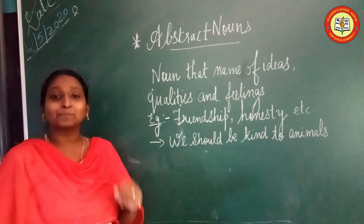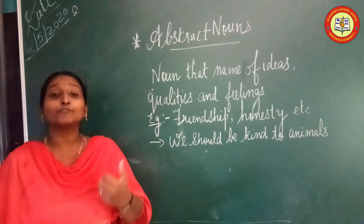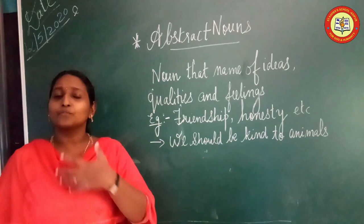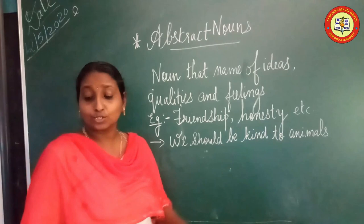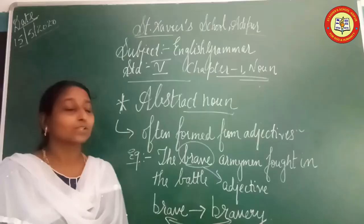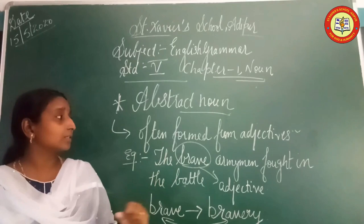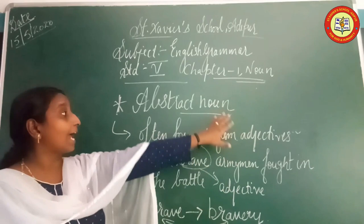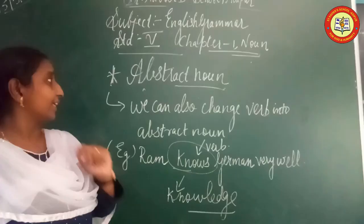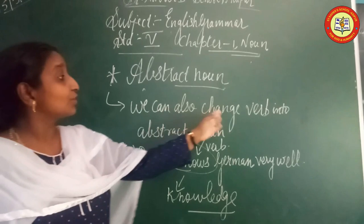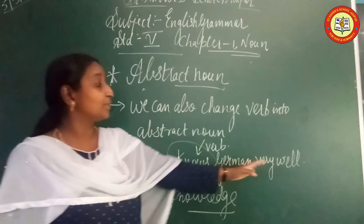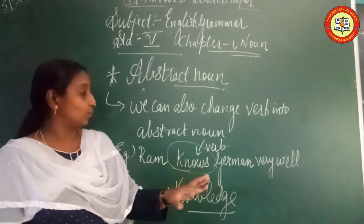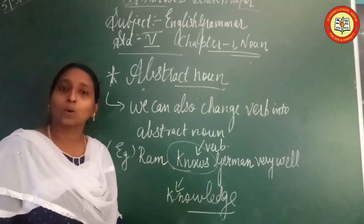The fourth type is Abstract Noun. The Abstract Noun is the name of ideas, qualities or feelings — such as friendship, honesty, kindness. For example: 'We should be kind to animals.' Here, 'kind' is an abstract noun. Some abstract noun words are formed from adjectives. For example: 'The brave army men fought in the battle.' Brave is an adjective, which can be changed into the abstract noun 'bravery.' We can also change a verb into an abstract noun — for example, 'know' becomes 'knowledge.'